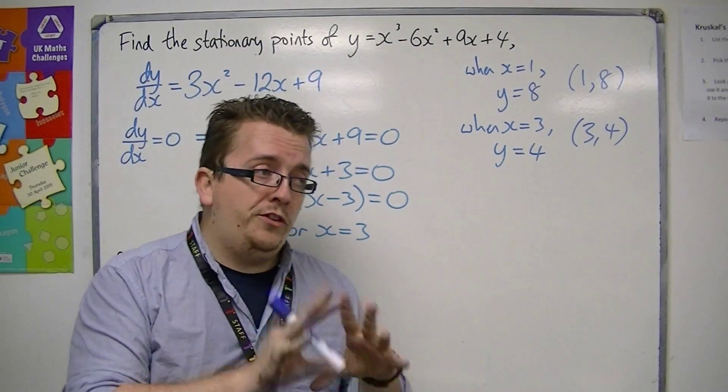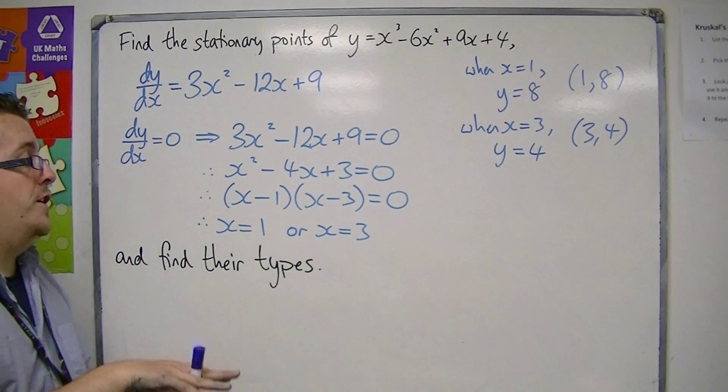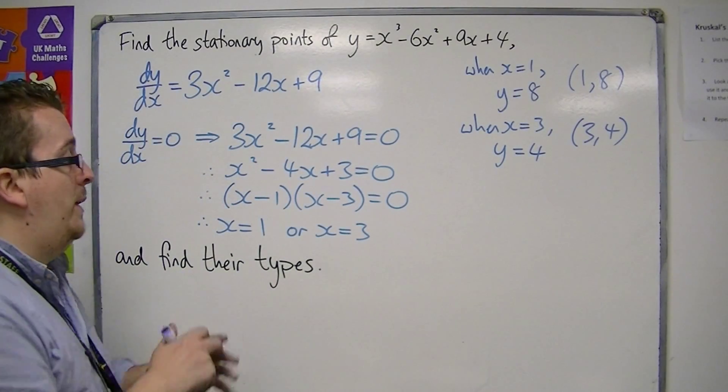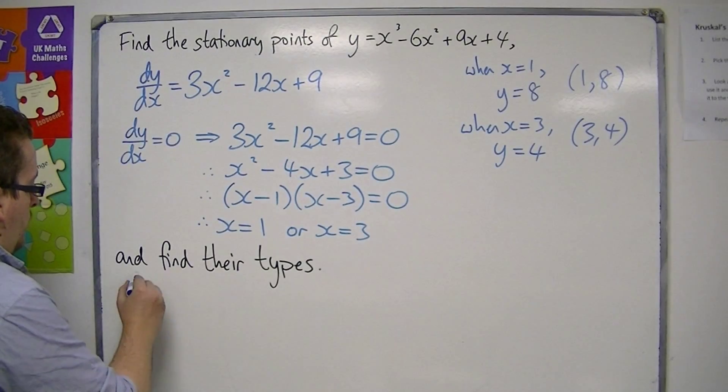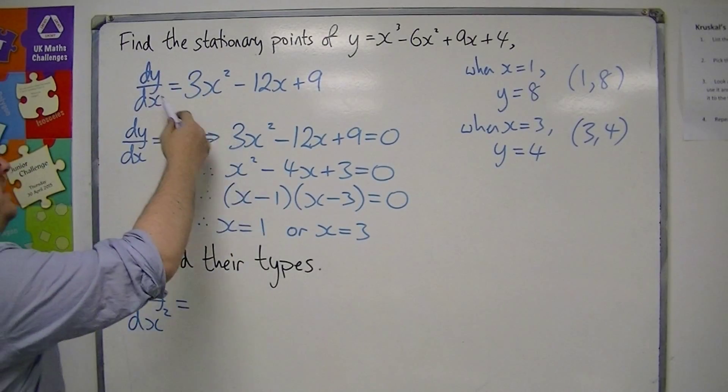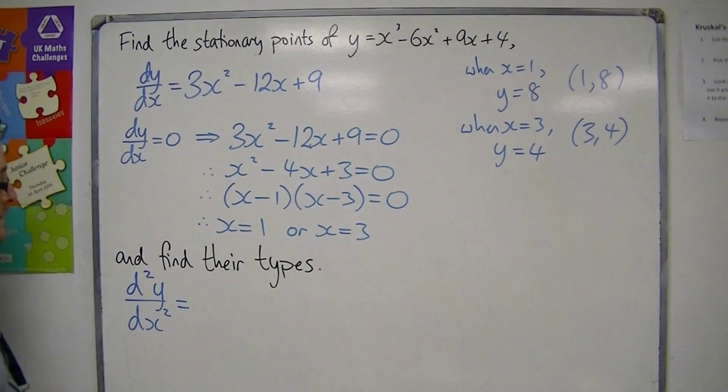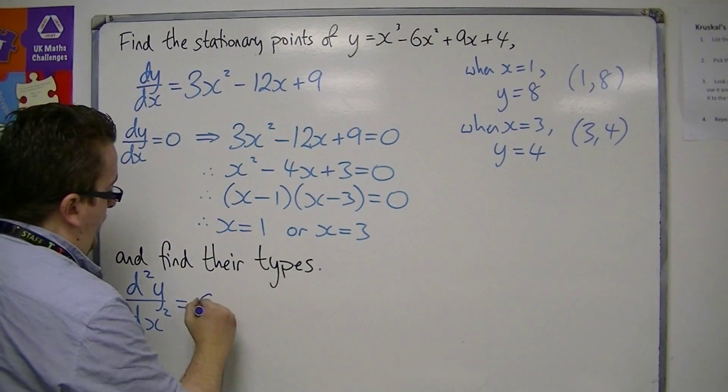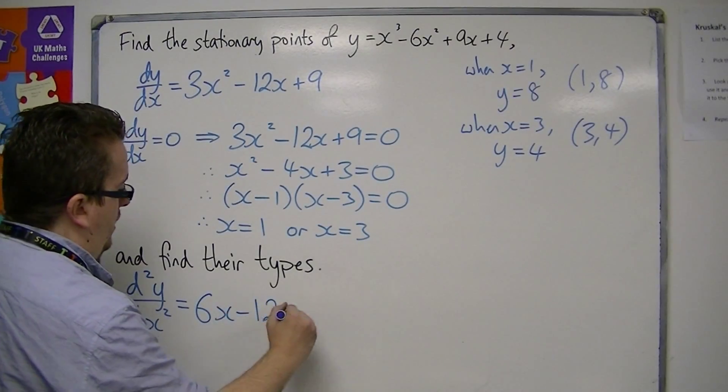And in order to do that, we're going to need to find the second derivative and evaluate it. So we need to find d²y/dx². That is differentiating the first derivative. So we would get 6x - 12.